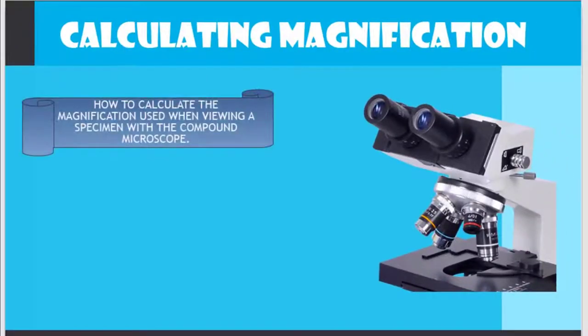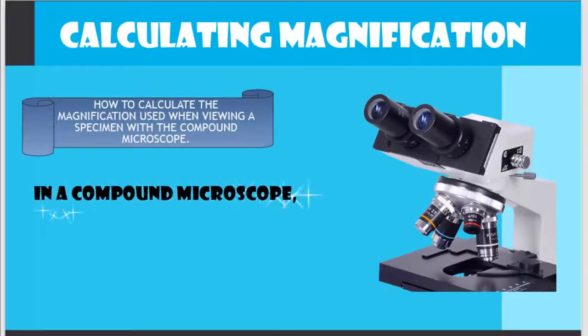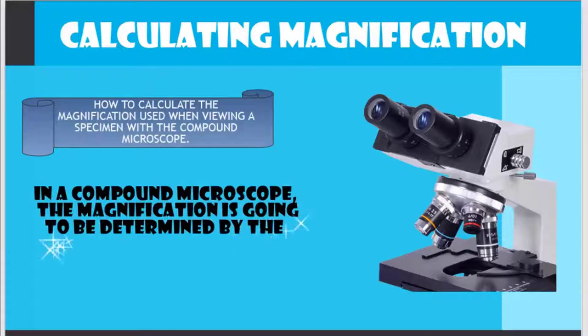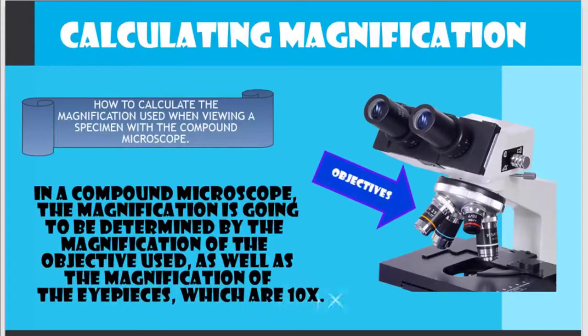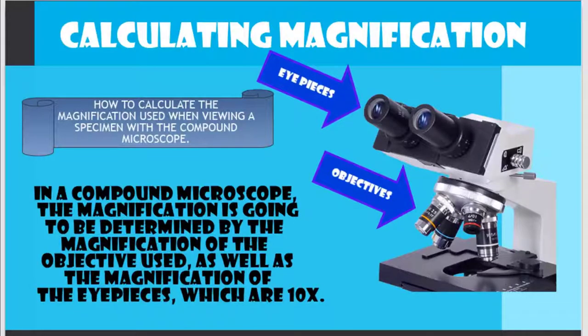Calculating Magnification. How to calculate the magnification used when viewing a specimen with a compound microscope. In a compound microscope, the magnification is going to be determined by the magnification of the objective used as well as the magnification of the eyepieces, which are 10x.